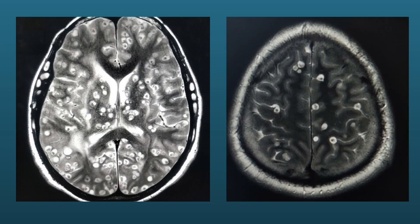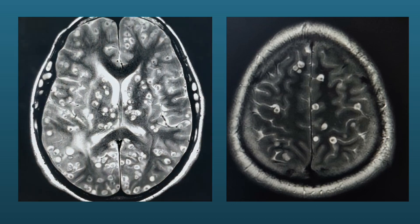In this we can see multiple cystic lesions with scolex inside them. These are T2 weighted images in which the cystic area will appear hyperintense and the scolex is appearing hypointense. We have to also note that these cystic lesions are also seen within the scalp muscles in these images.